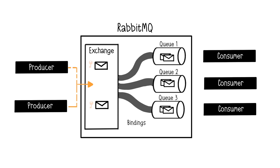Messages can include a routing key to determine which binding they should pass through. This allows messages to be distributed in various ways, depending on the configuration of bindings and routing keys.